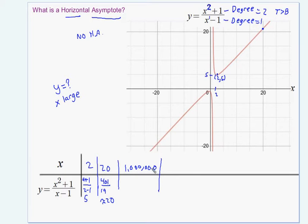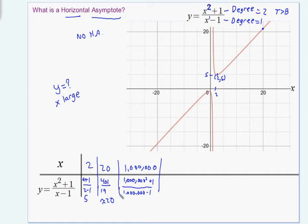When you plug in a million, adding 1 and subtracting 1 doesn't matter much. If you take a million and square it, it gets astronomically large, so adding 1 won't change the numerator much. In the denominator, minus 1 changes it from 1,000,000 to 999,999. You can do the calculation with and without the plus 1 and minus 1 and see it's not a big difference. So this is approximately a million squared over a million, and one million cancels, leaving 1 million.